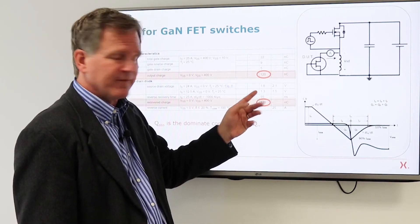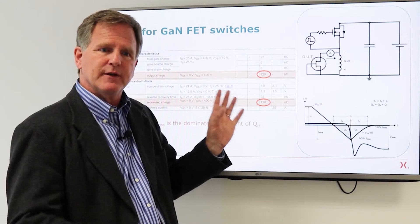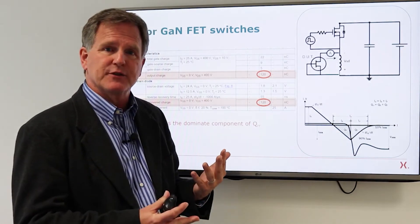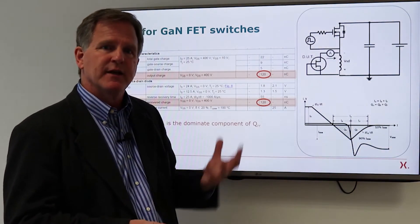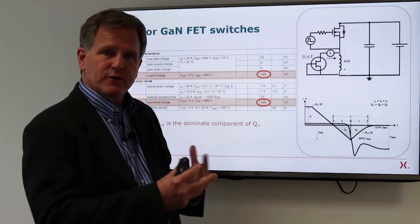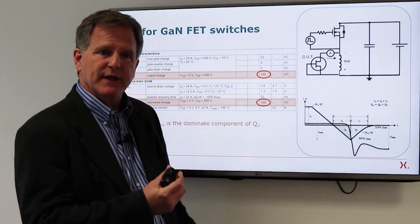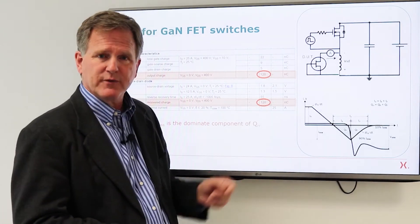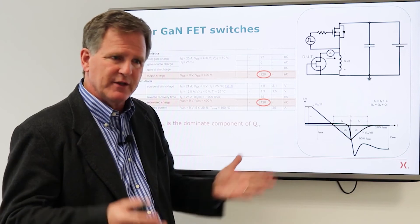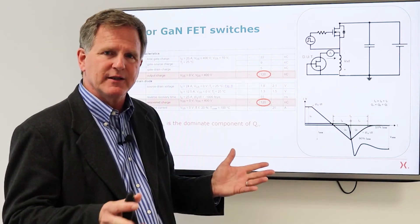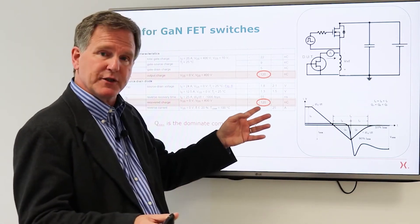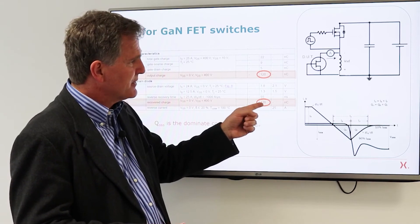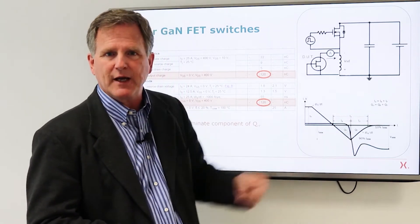Now the confusion comes in if you compare data sheets for other GAN devices some manufacturers don't do the two chip approach and they'll say since there is no PN junction there is no minority charge and they'll put a zero for recovered charge. Okay given the assumption and the understanding that makes sense but it does lead to confusion if you compare that to this number which includes the output charge.